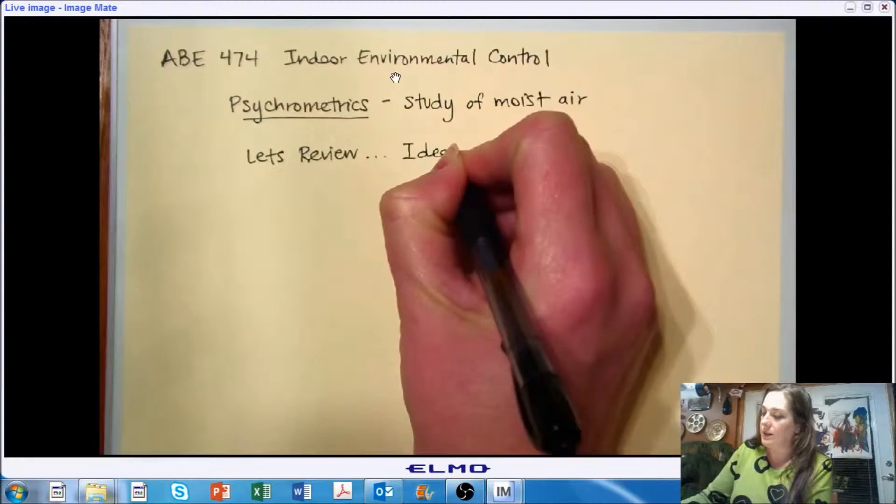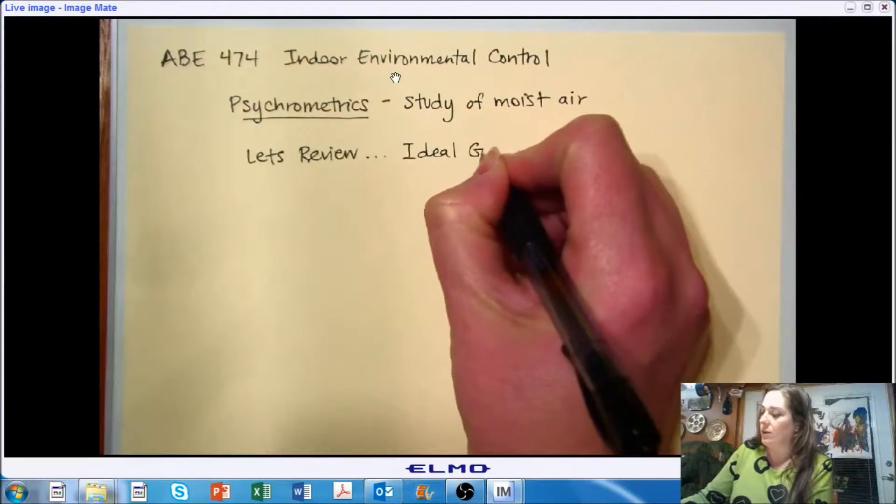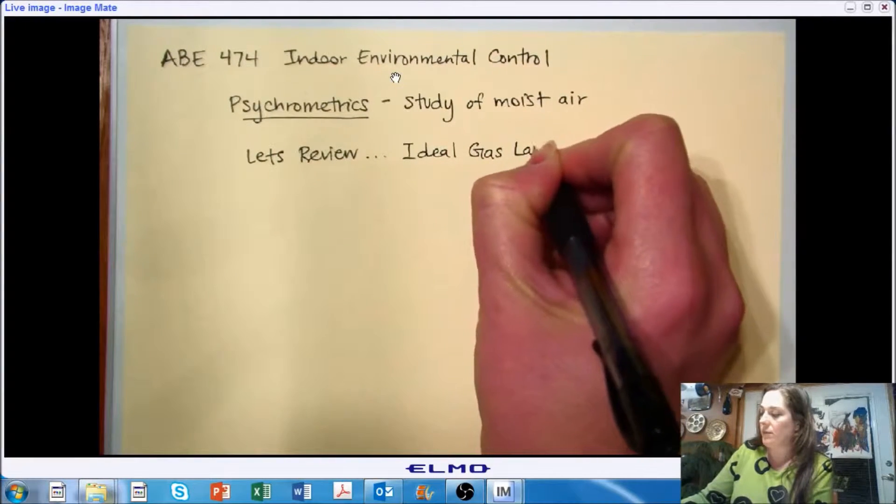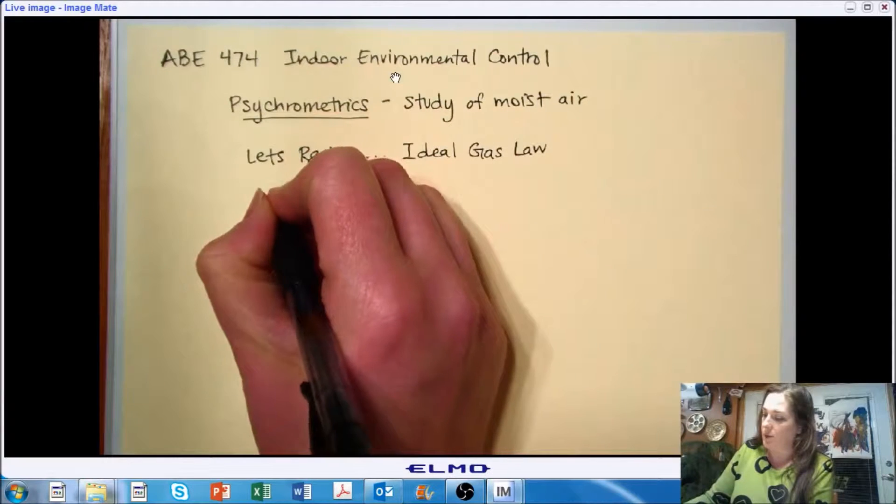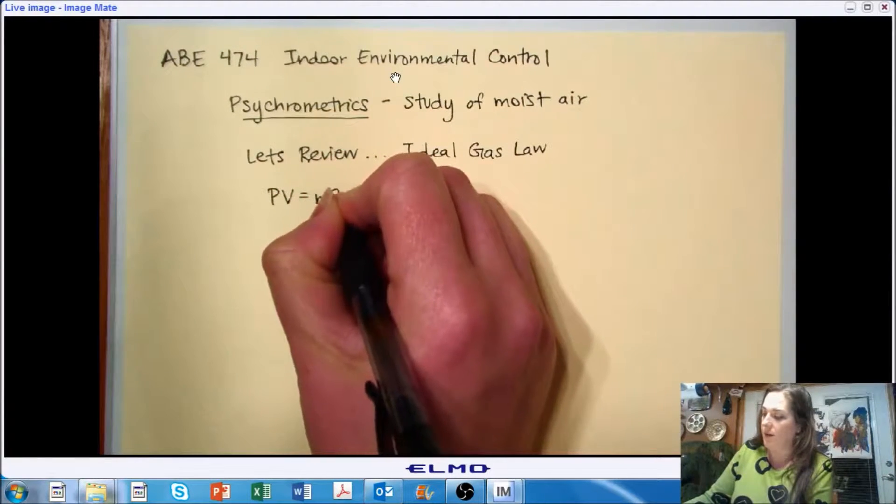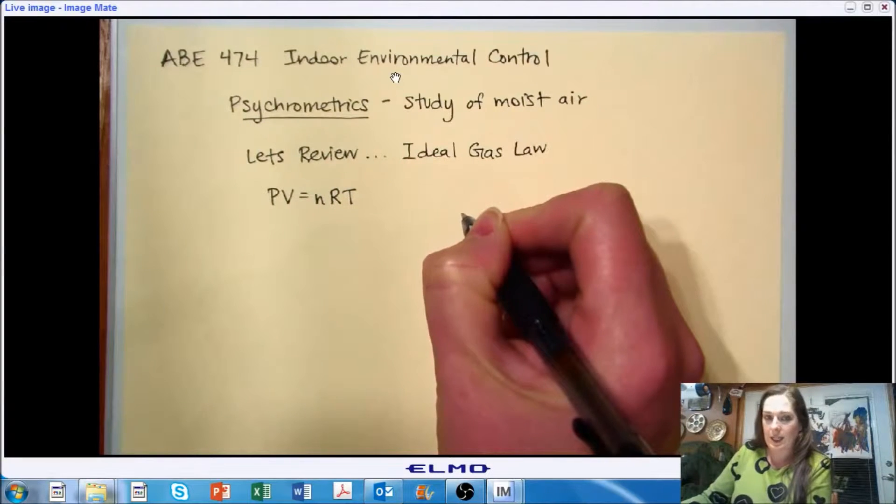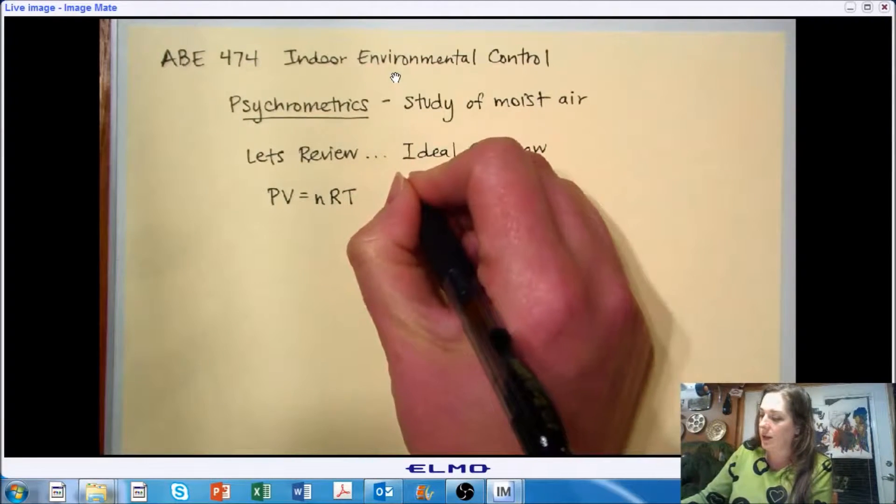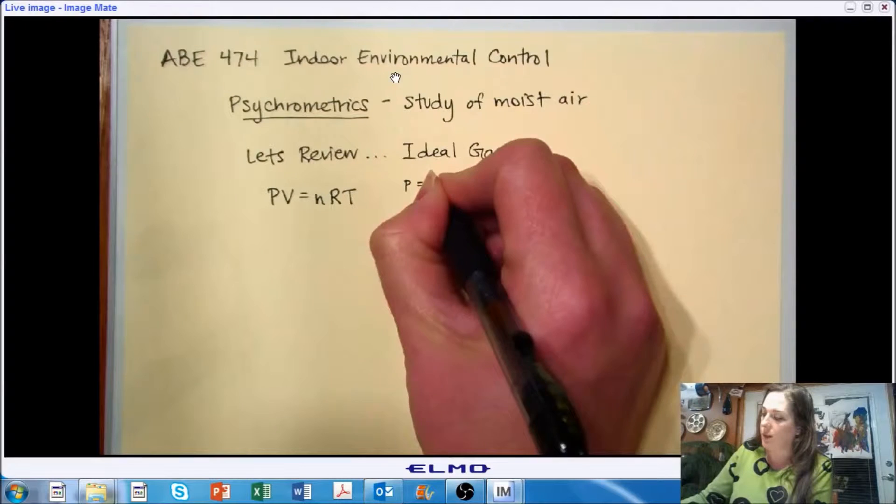Specifically, let's take a look at the ideal gas law. And I am sure from chemistry, this is ingrained in your memory. PV equals nRT. So let's break it down and look at each of the variables and make sure that we recall what they each stand for.